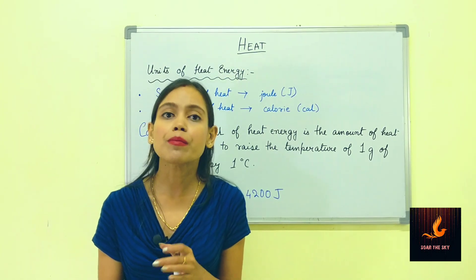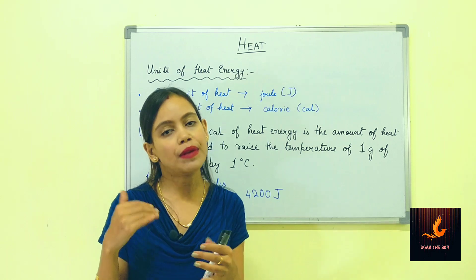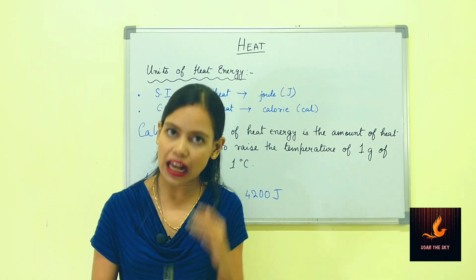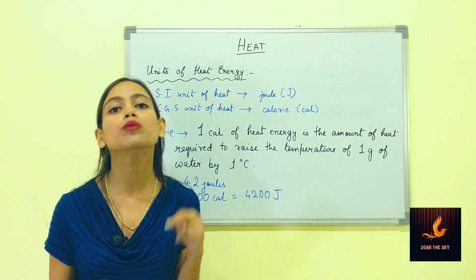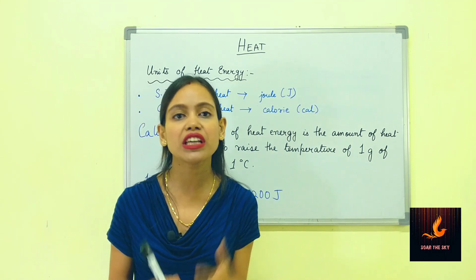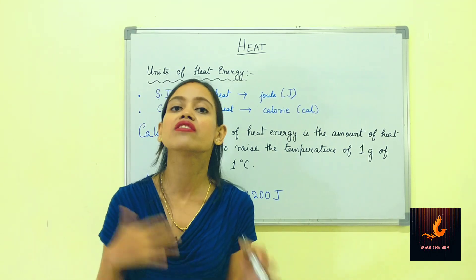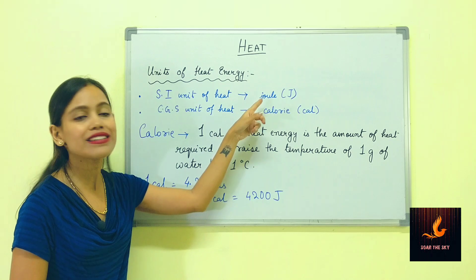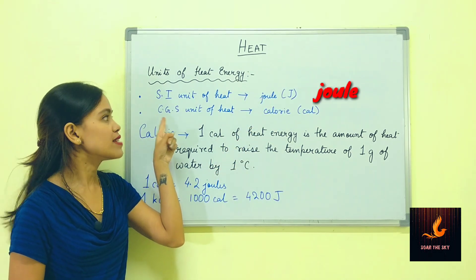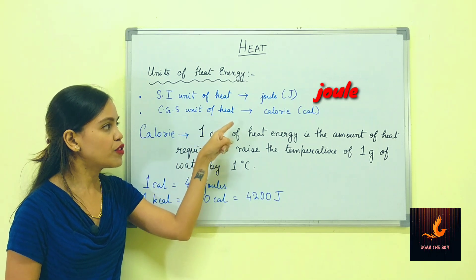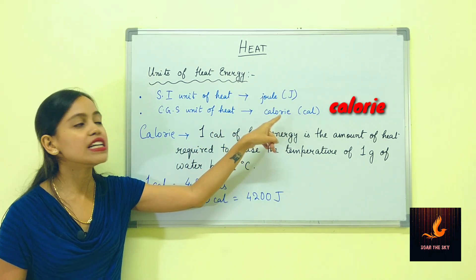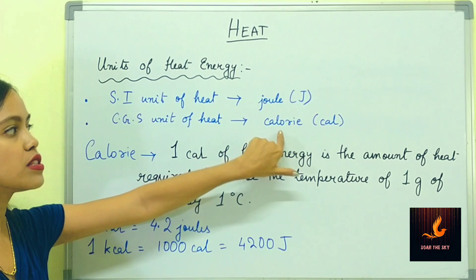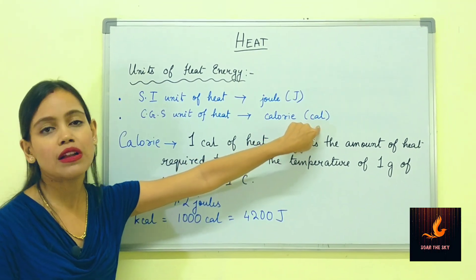The quantity of heat supplied or received by a body is measured either in calories or in joules. These are the two basic units to measure heat energy. The SI unit of heat is joule, written with the symbol capital J. The CGS unit of heat is calorie, written in small letters with the symbol cal.